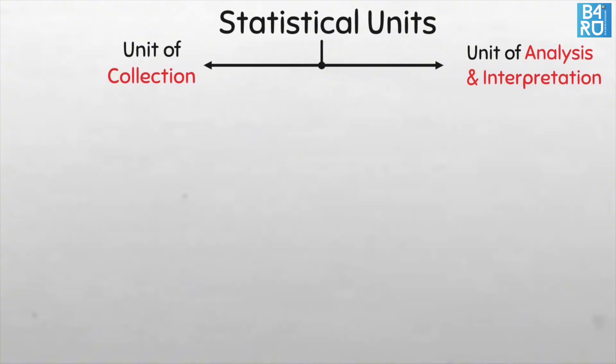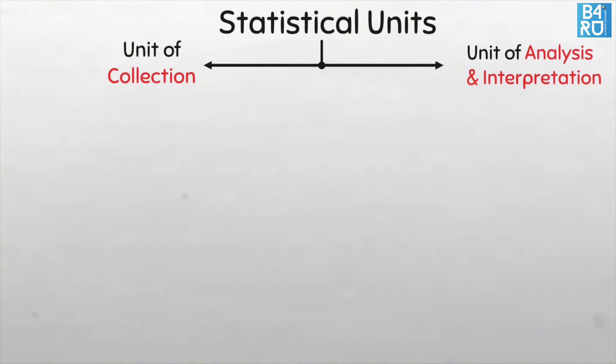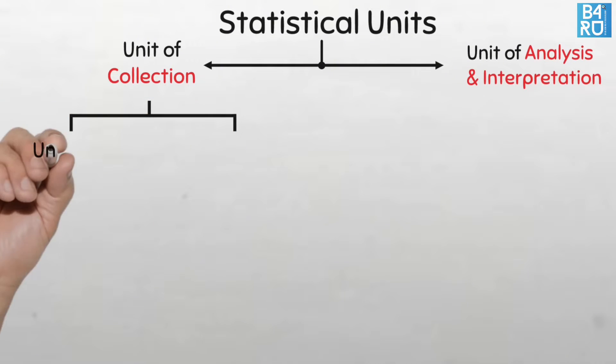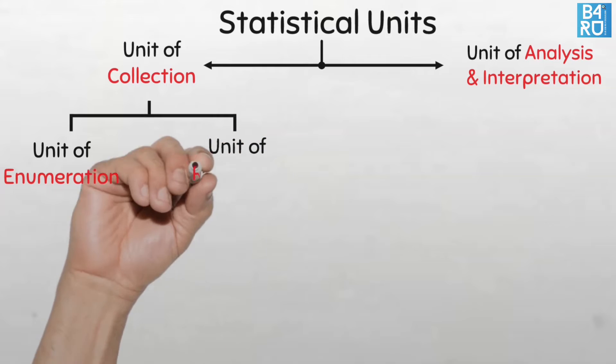The unit of collection can be either a unit of enumeration, depending on the unit that is counted or enumerated, or depending on the unit that is measured or recorded, hence the unit of recording.